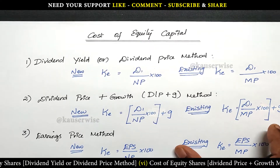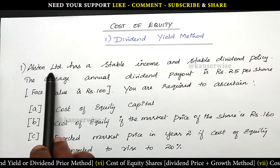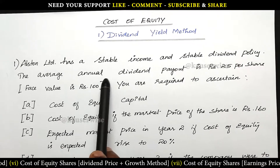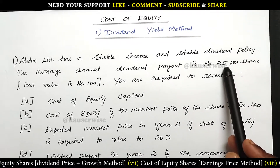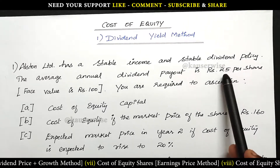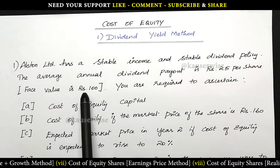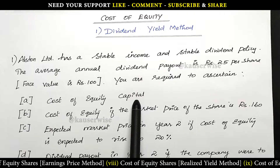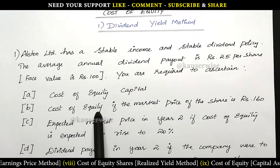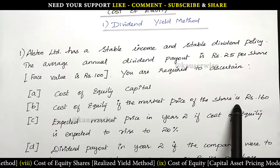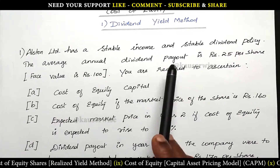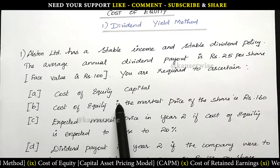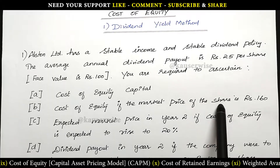Now let's see the numerical problem. Alston Limited has a stable income and stable dividend policy. The average annual dividend payout is 25 rupees per share and the face value is 100 rupees. We are required to ascertain the cost of equity capital. Second, find the cost of equity if the market price of the share is 160. This second case is for existing shares, since market price is given, while the first case is for new shares.